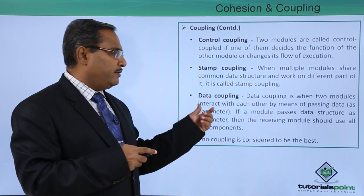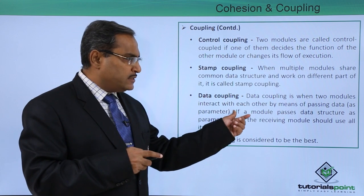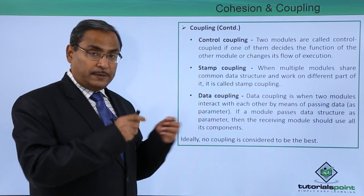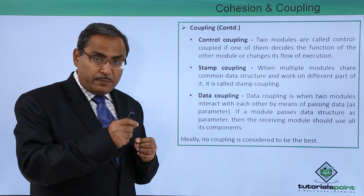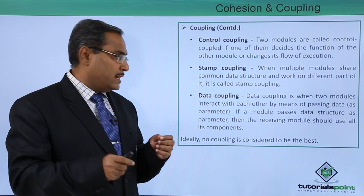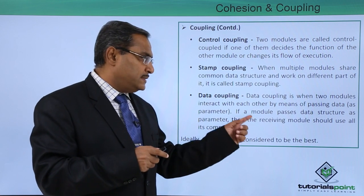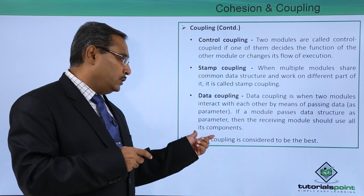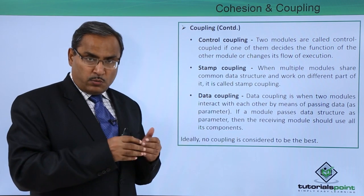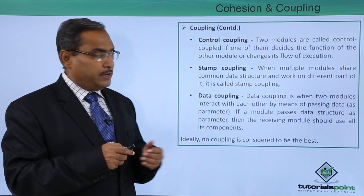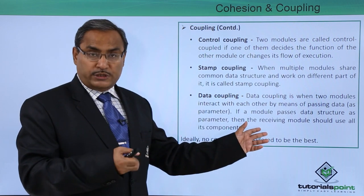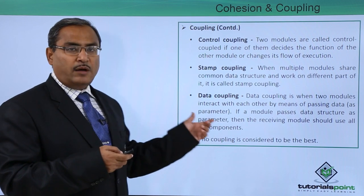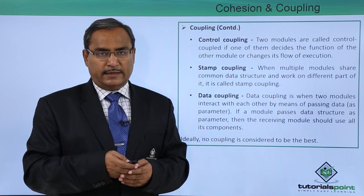In data coupling, two modules interact by passing data as parameters from one module to another. If a module passes a data structure as a parameter, then the receiving module should use all of its components. So whenever a data structure is passed as a parameter, the other module receiving it can access and should use all the components existing in that data structure.